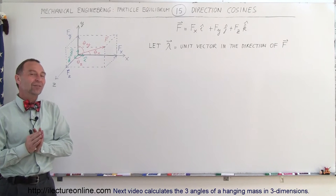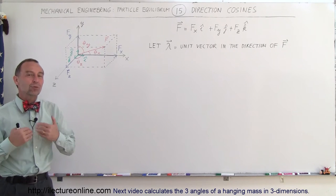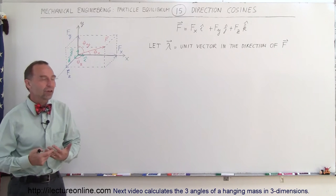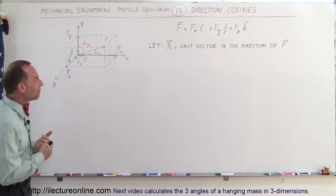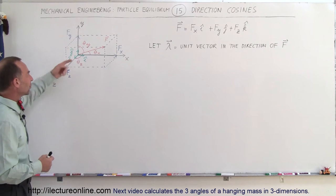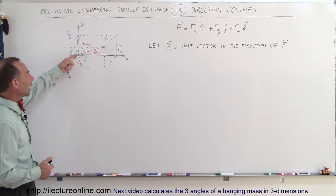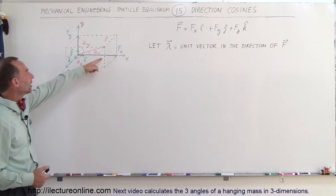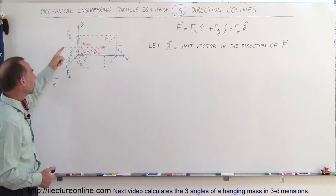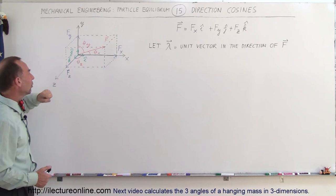Welcome to Electronline. Now let's take a look at the direction cosines of a vector. We have a three-dimensional vector out in space that has an x, a y, and a z component.